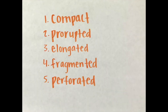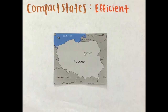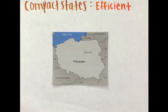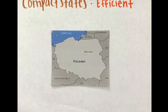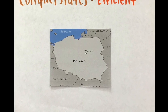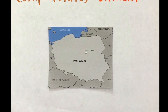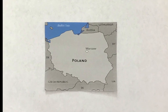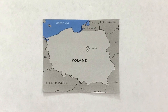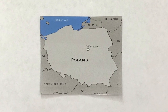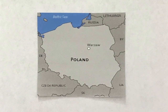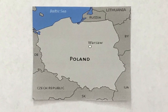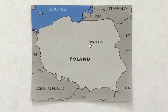Countries have one of five basic shapes. In a compact state, such as Poland, the distance from the center to any boundary does not vary significantly. The ideal compact state would be shaped like a circle with a capital at the center and the shortest possible boundaries to defend. Compactness can be beneficial for smaller states because good communications can be more easily established with all regions, especially if the capital is near the center. However, compact states are just as likely as others to experience civil wars and ethnic conflict.